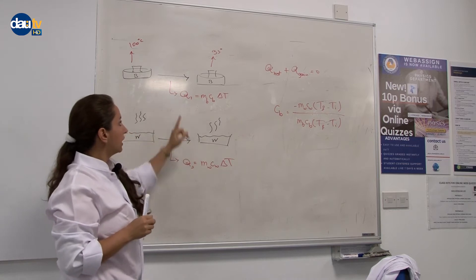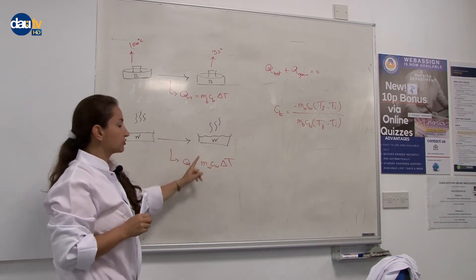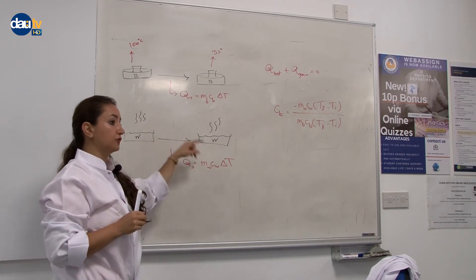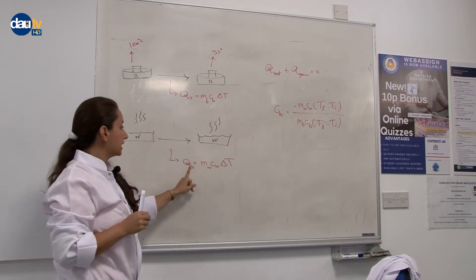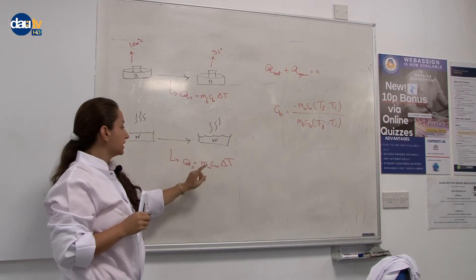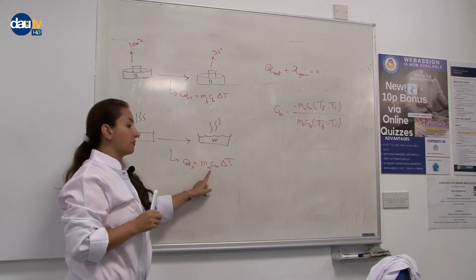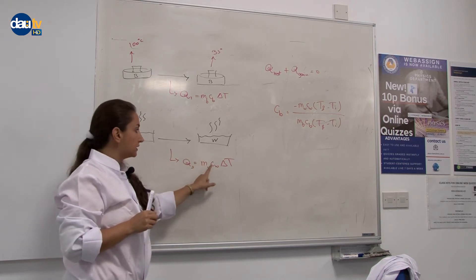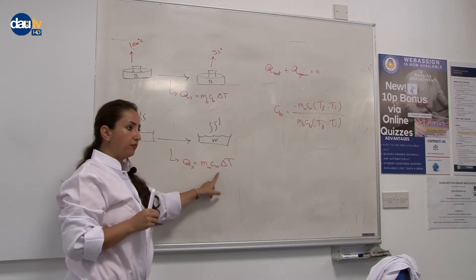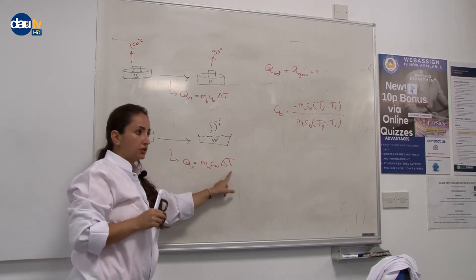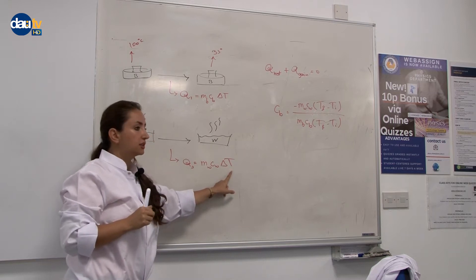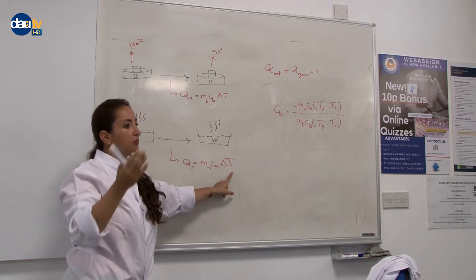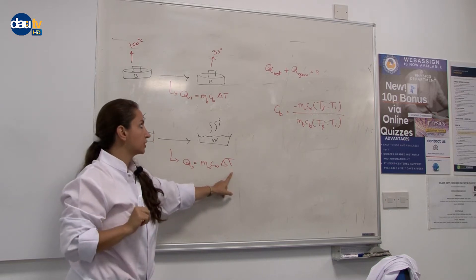For water as well, we only change the temperature, not the phase. So Q1 and Q2 are related to the change of temperature. Q2 is for water: we use mass of water, C of water, and delta T, which is T_final minus T_initial.